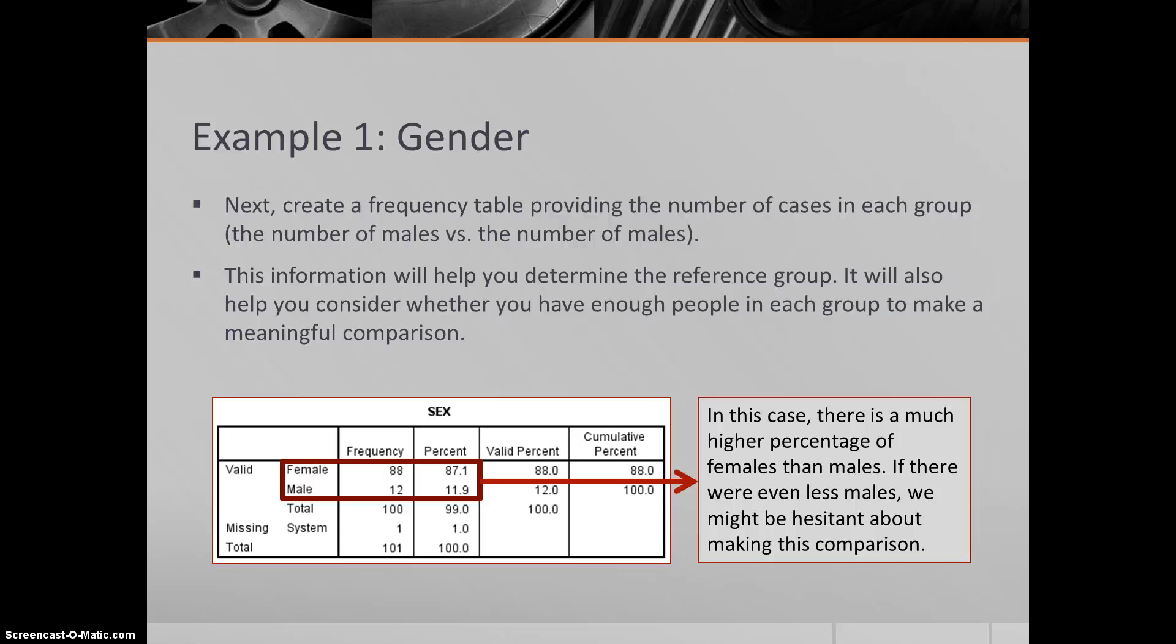Next, what we'll do is create a frequency table using the descriptive statistics function. That can tell us the number of cases and the percentage of cases in each group. Here we have females and males - we have 87% females and roughly 12% males. This lets us know that we have more females than males. That can help us pick our reference group, if we haven't decided already for theoretical reasons. It also lets us know, do we have enough people to even make this comparison? We only have 12 males. That's not a lot. We'd want to be sort of tentative about our conclusions, maybe even hesitant about this comparison. If we had less than this - 5, 4, 3 - we might not even want to run this analysis. There's too few. If we had only one male, we couldn't even run the analysis. It wouldn't work. You might have to end up just not making the comparison or possibly deleting some cases.